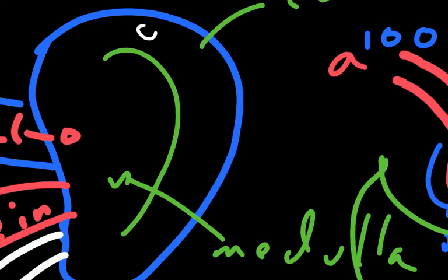We have the proximal convoluted tubule in the cortex, then we have the descending limb, the ascending limb, the distal convoluted tubule, and the collecting duct. Now it is important to realize that nephrons don't act individually.